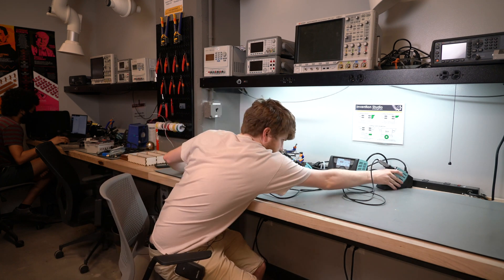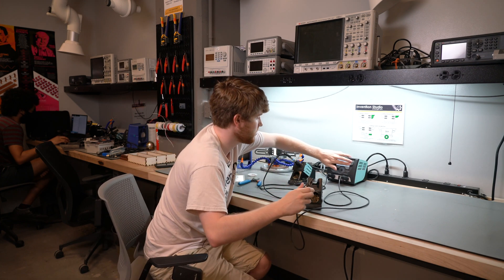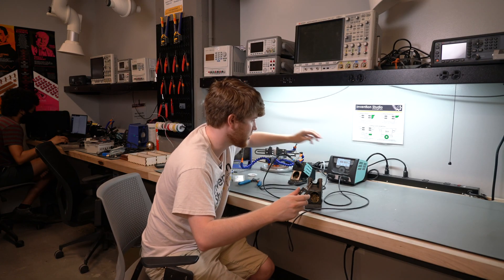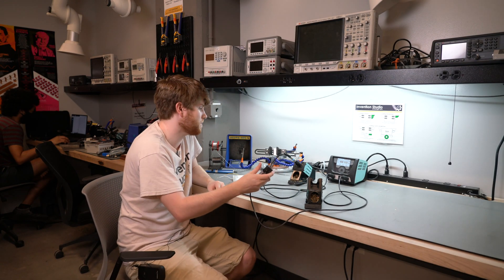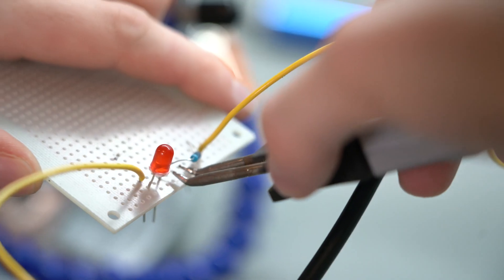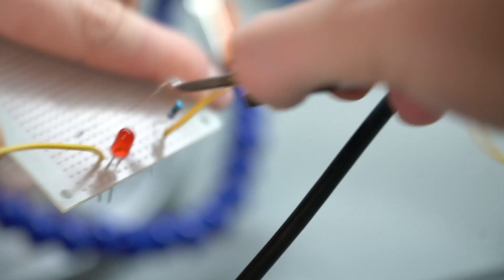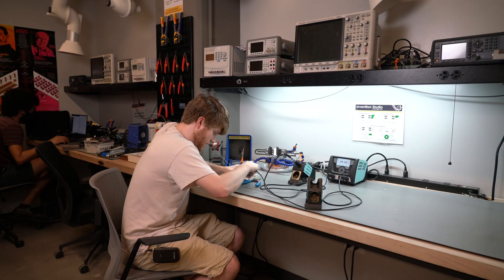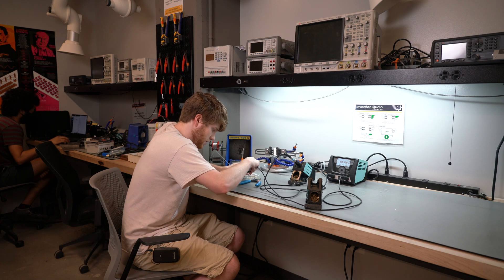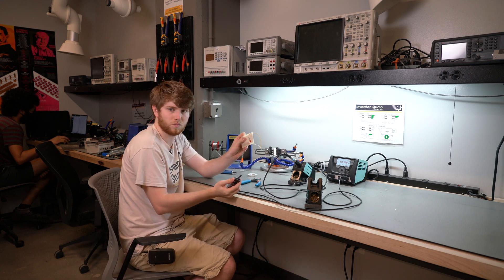The final method is with this separate soldering iron here, the desoldering tweezers. You turn it on the same way you turn on an iron. And with this, you can grab a component, and it will heat up the solder. And you can just either push or pull it out of the board. Just like so.